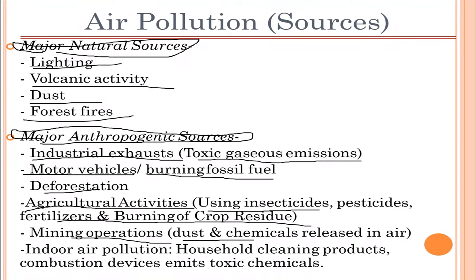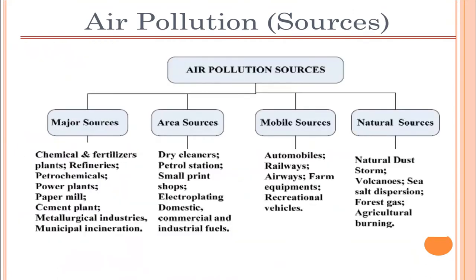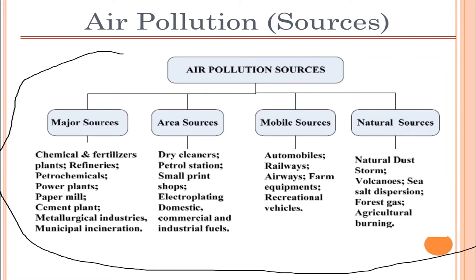Other anthropogenic sources include deforestation, agricultural activities such as use of pesticides, insecticides, fertilizers, and burning of crop residues, mining operations releasing dust and chemicals, indoor air pollution from household cleaning products, and combustion devices that emit toxic chemicals.